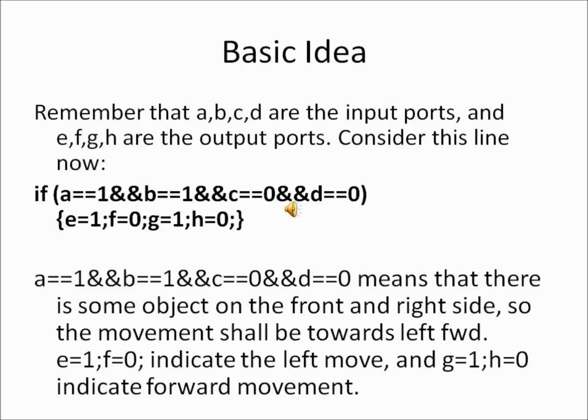Here is some more explanation of the programming. This line: if a==1 && b==1 && c==0 && d==0, indicates that there is some object on the front and right side but there is nothing on the left side. If you just see the picture of the robot in this video, it will be very clear to you what these values of A, B, C, D mean. So the movement should be made in the left forward direction.